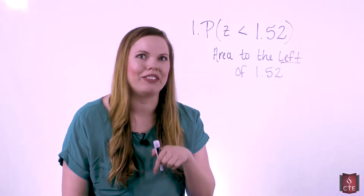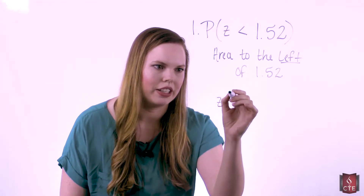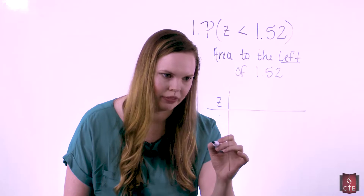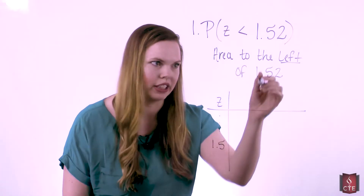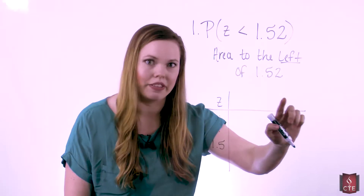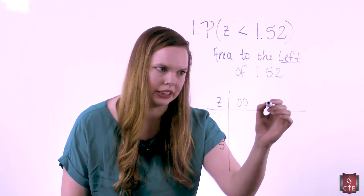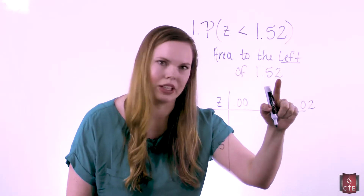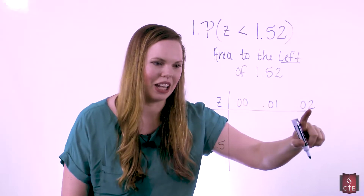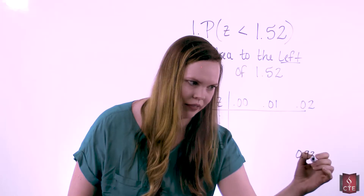We simply look up 1.52 in the table. In the table, z-scores are along the edges. You look at the row for 1.5 — that's 1.52 with the second decimal place removed — and then along the top you find the column for .02, since the second decimal place is 2. Looking for 1.5 on the left and .02 across the top gives the table value of .9357.